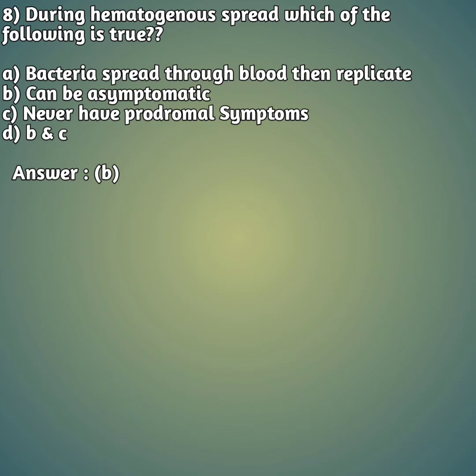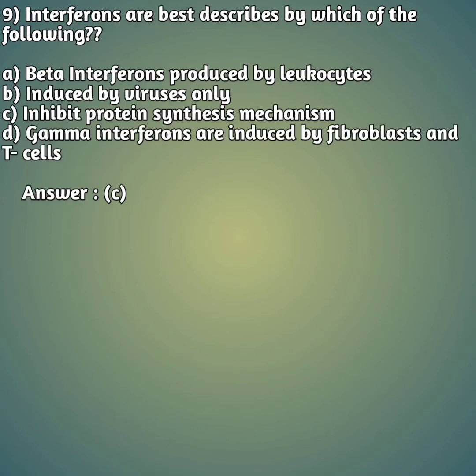Eighth question: during hematogenous spread, which of the following is true? Option A: bacteria spread through blood then replicate. Option B: can be asymptomatic. Option C: never have prodromal symptoms. Option D: B and C. The right answer is B — hematogenous spread can be asymptomatic, meaning you do not have any symptoms.